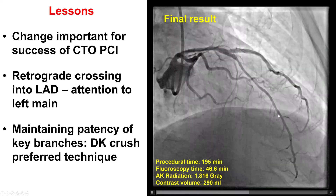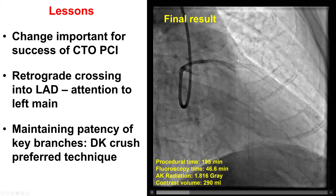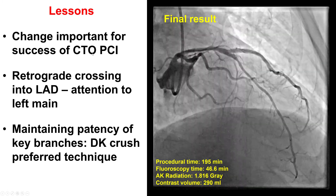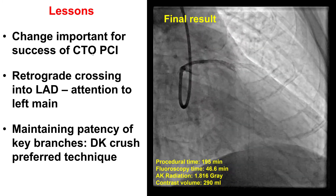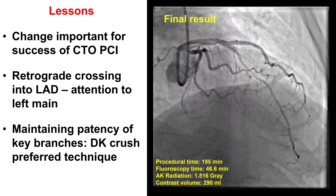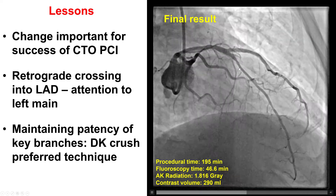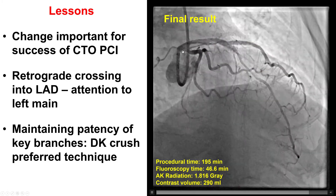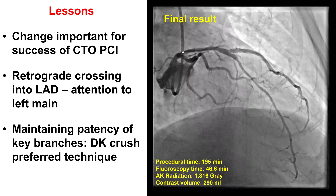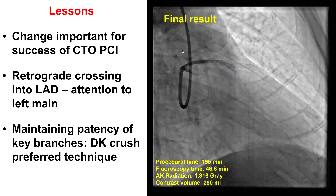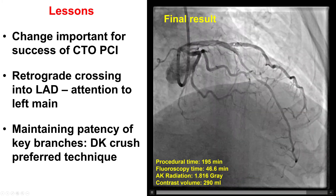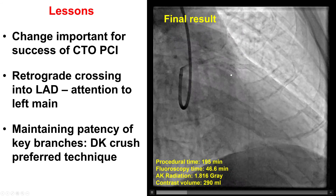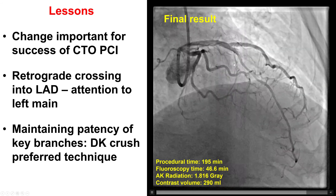We can see that the LAD caliber has already increased after restoring antegrade flow. Several lessons from this case: first, the importance of flexibility — antegrade wire escalation did not work, but a retrograde option was available and used successfully. Second, when there is retrograde crossing into an LAD CTO, it is important to prevent injury of the left main, which is why using a guide liner and intravascular ultrasound guidance are helpful. Finally, maintaining patency of key side branches can be done with an upfront two-stent technique, and the DK crush technique may provide the best outcomes in this setting.